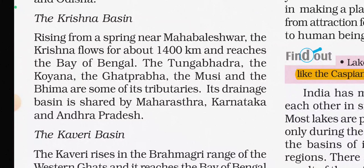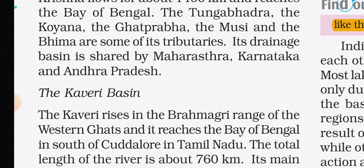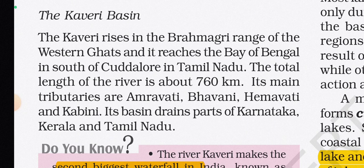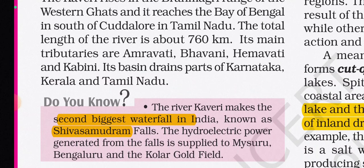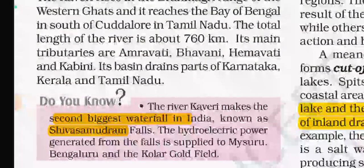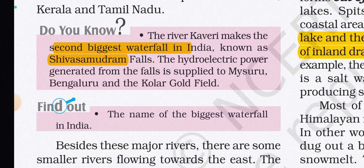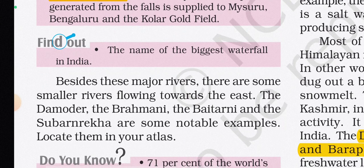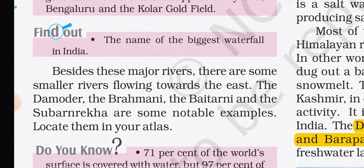The Krishna rises near Mahabaleshwar in Maharashtra, flows about 1400 km to the Bay of Bengal. Its tributaries include the Tungabhadra, Koyna, Ghataprabha, Musi, and Bhima. Its basin is shared by Maharashtra, Karnataka, and Andhra Pradesh. The Kaveri rises in the Brahmagiri range of the Western Ghats and reaches the Bay of Bengal south of Cuddalore in Tamil Nadu. Its total length is about 760 km and main tributaries are Amravati, Bhavani, Hemavati, and Kabini. Its basin drains parts of Karnataka, Kerala, and Tamil Nadu. The Kaveri makes the second-biggest waterfall in India — Shivanasamudra — whose hydroelectric power is supplied to Mysuru, Bengaluru, and the Kolar Gold Fields.